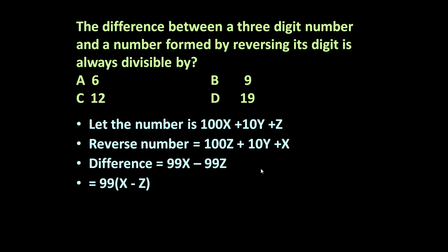Obviously, if you see here, this 99 is divisible by 9. This 99 is not divisible by 6, not divisible by 12, and not divisible by 19.